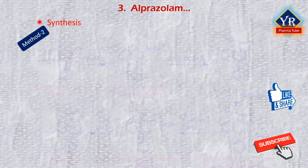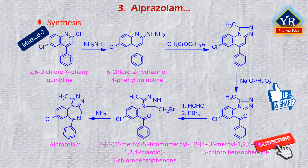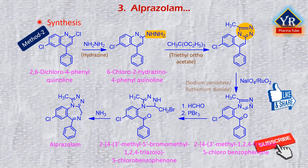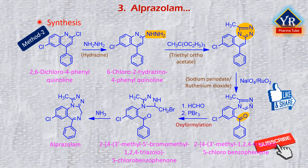In an alternative, easier synthesis starting with 2,6-dichloro-4-phenylquinoline, this compound reacts with hydrazine to give 6-chloro-2-hydrazino-4-phenylquinoline. Boiling with triethyl orthoacetate results in cyclization forming the triazole ring. The product undergoes oxidative degradation with periodate and ruthenium dioxide in acetone, giving the corresponding triazolo-chlorobenzophenone. Oxymethylation with formaldehyde, followed by treatment with phosphorus tribromide, yields the bromomethyl derivative, which is then substituted with an amino group from ammonia to form alprazolam via intermolecular heterocyclization.